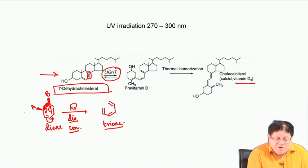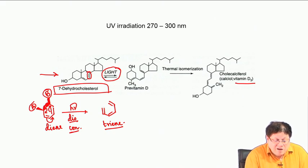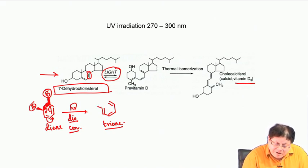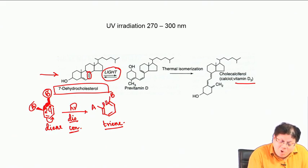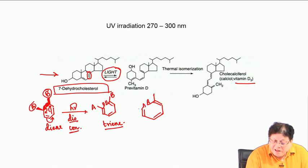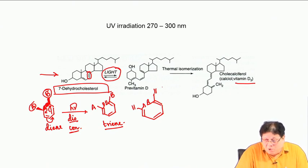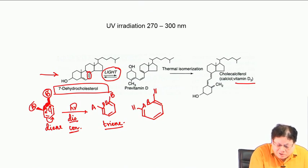In disrotatory motion, substituents A and B that were cis to each other go in the same direction — they can both go inward or both outward. So both isomers are possible for disrotatory motion.